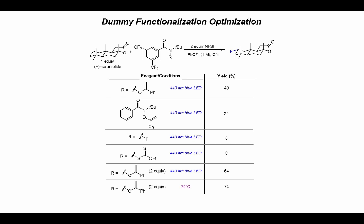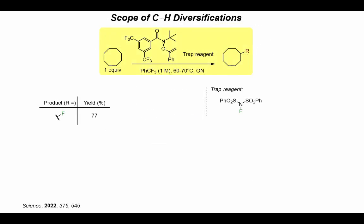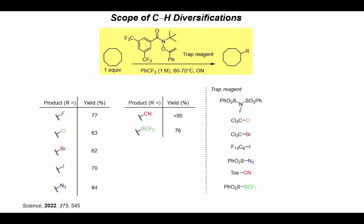That's highly enabling when thinking about scale-up — we don't need specialized equipment like blue-light-mediated reactions if we can simply use thermolytic conditions. Looking at the scope of traps using cyclooctane as a model substrate, I was able to show CH fluorination, CH chlorination, and CH bromination. Additionally, using a perfluoroalkyl iodide allows for CH iodination — a reaction not possible using traditional free radical halogenation as it's significantly uphill, and there are only a couple of examples in the literature on a limited scope of substrates. We also demonstrated CH azidation, cyanation, trifluoromethylthiolation, thioetherification, addition of a phenyl tetrazole thiol, and an alkenylation reaction.